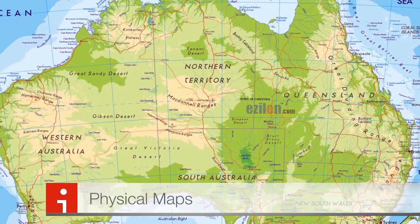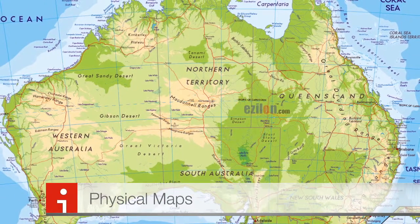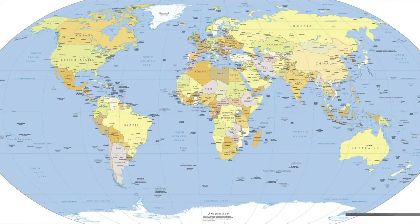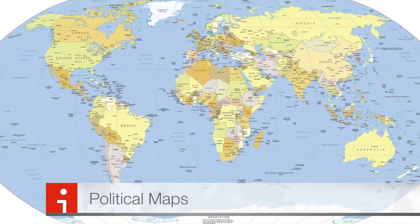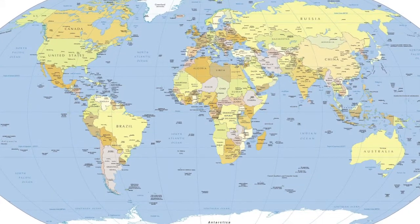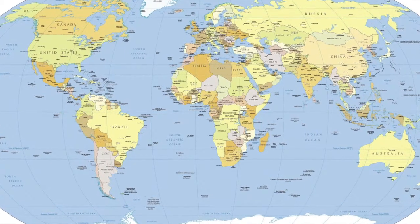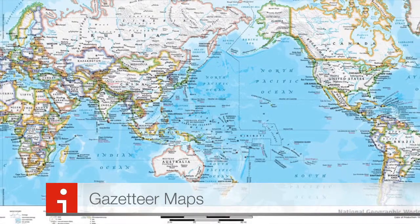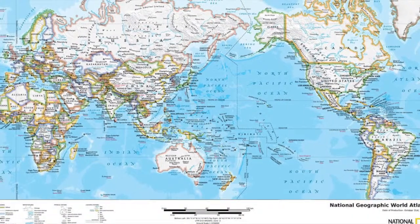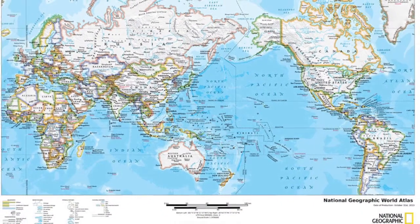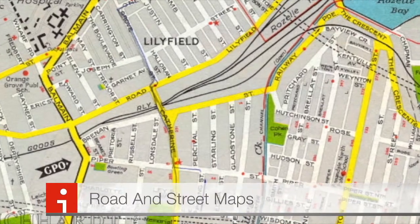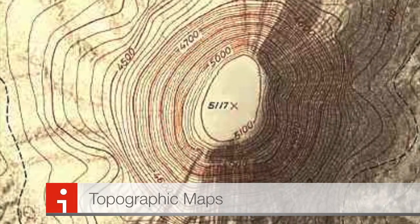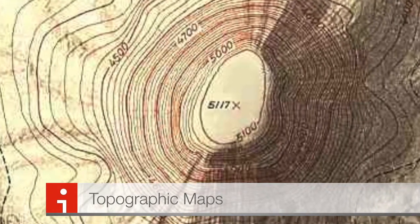Types of maps. Physical maps show natural features like bodies of water, mountains and deserts. Political maps show political units like states, territories, capital cities, roads and so forth. Gazetteer maps are a combination of physical and political maps and they are found in atlases. Road and street maps are just street directories. Topographic maps are maps that show detail and the height of the land.